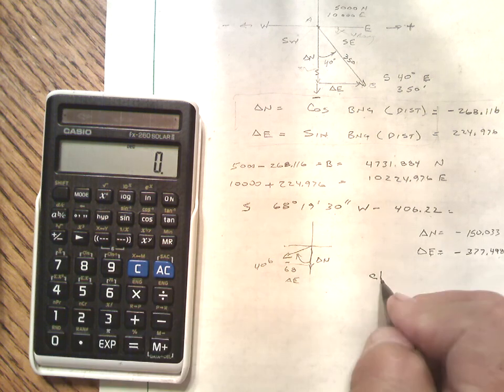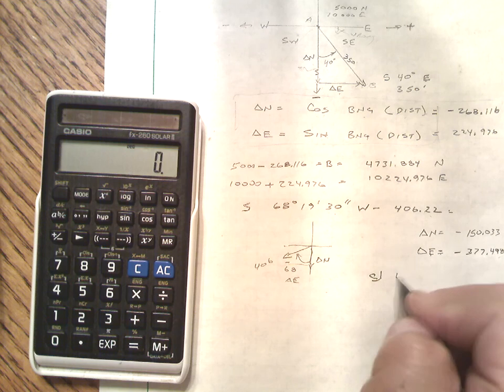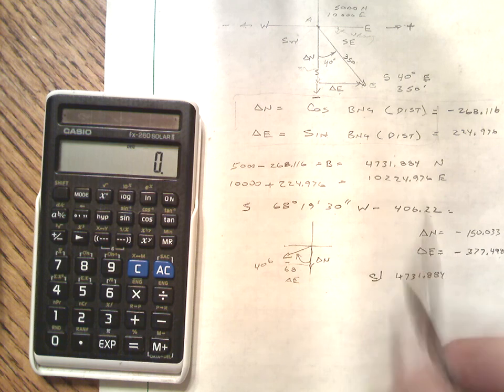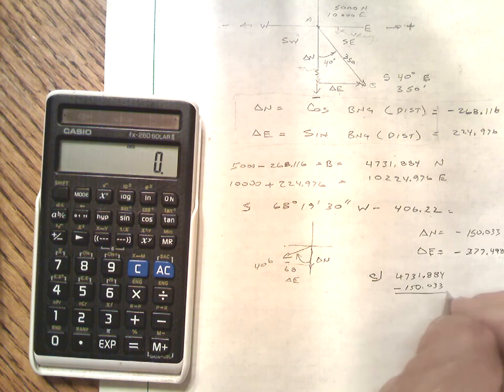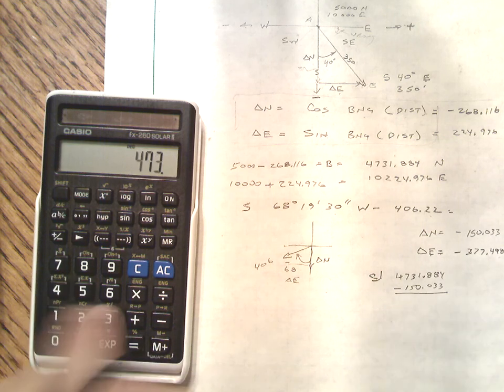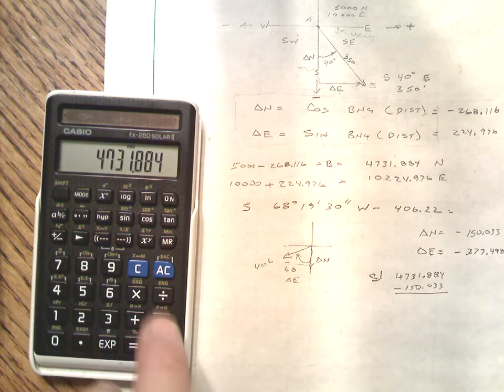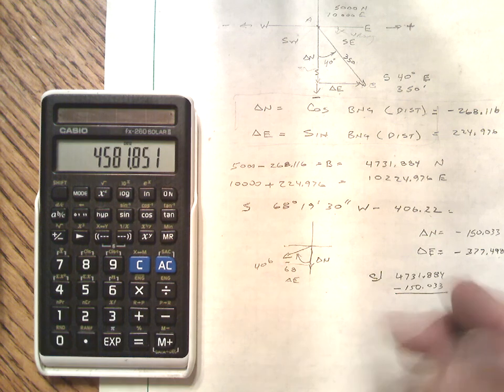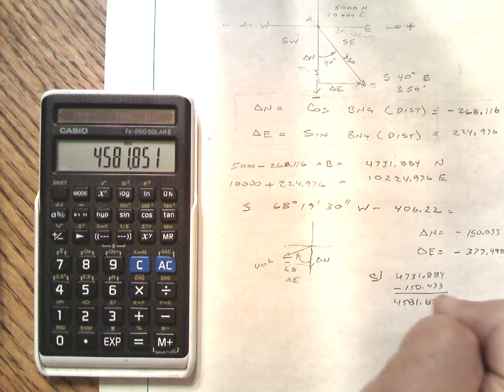So now, the coordinate of C is 4,731.884, B's coordinate, and we have to subtract 150.033. Or 4,581.851 in the northing.